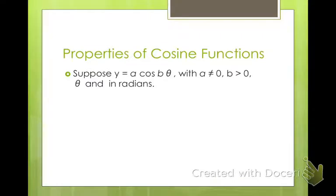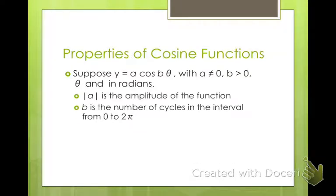So properties of a cosine function, this should look very similar to a sine function. y equals a cosine b theta. And a is still the amplitude of the function. b is still the number of cycles of the interval from 0 to 2 pi. And to find the period of the function, 2 pi over b. Those are all the same things that we talked about with sine function, except now we're talking about cosine.